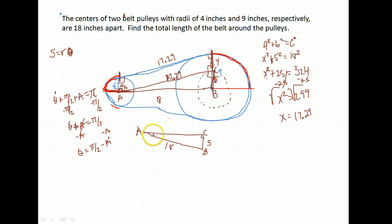For angle A, I have the opposite side and the hypotenuse. Clear back in lesson or unit one, we talked about how the sine of an angle in a right triangle is the opposite over the hypotenuse. So sine of angle A is 5 over 18.